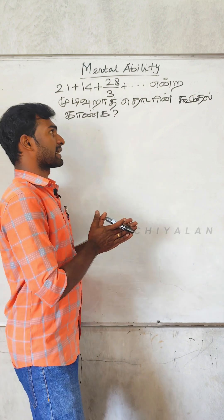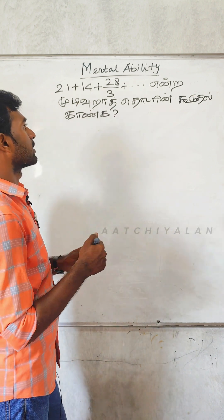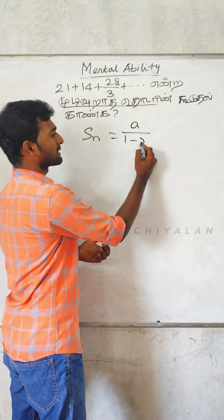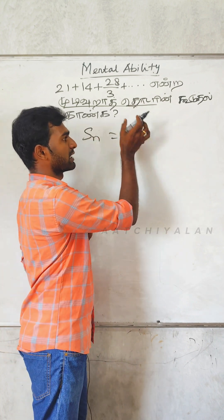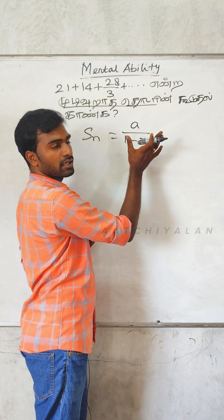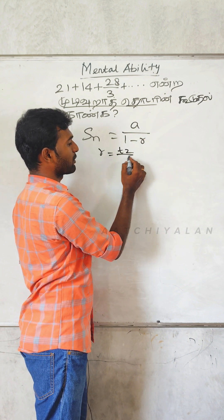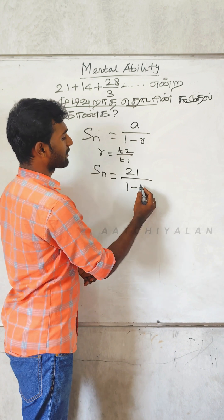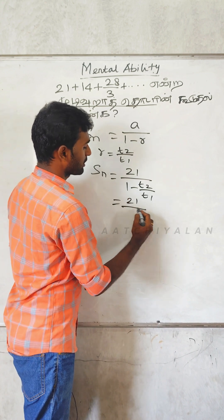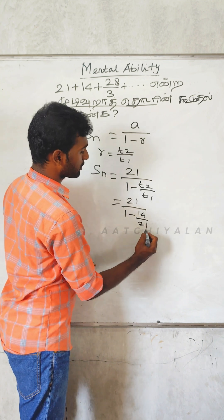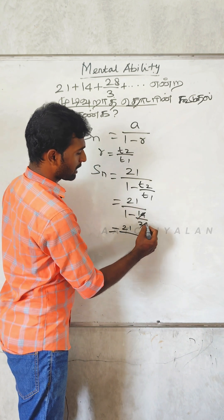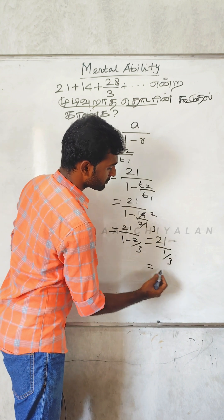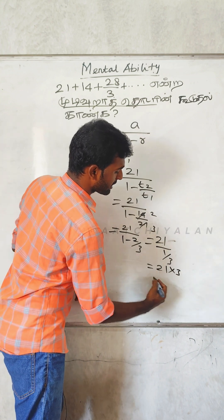21 plus 14 plus 28 by 3 — it will be up to infinity. The formula is Sn is equal to a by 1 minus r. Sn is the sum of the terms. R is equal to t2 by t1. So the formula: a is 21, 1 minus r — t2 by t1 is 14 by 21 equals 2 by 3. So 21 by (1 minus 2 by 3) equals 21 by (1 by 3) equals 21 × 3. The answer is 63.